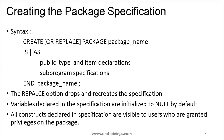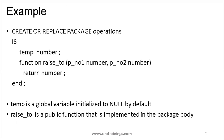Looking at a syntax example for the package specification: the package name is 'operation'. After CREATE OR REPLACE PACKAGE operation IS, we declare a temporary variable called 'temp' with a data type, and we declare a function called 'raise_to' with two parameters returning a number. Here, 'temp' is a global variable initialized to null by default, and 'raise_to' is a public function that will be implemented in the package body.